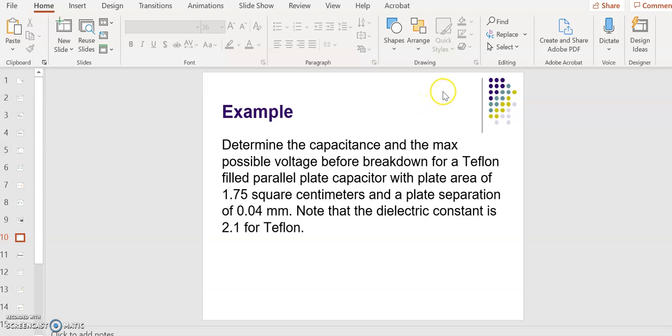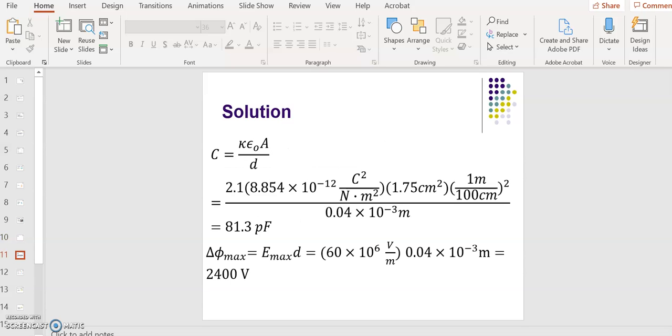All right, let's do an example problem here. In this problem, we are determining the capacitance and the maximum possible voltage before breakdown for a Teflon-filled parallel plate capacitor that has a plate area of 1.75 square centimeters and a plate separation of 0.04 millimeters. Note that the dielectric constant is 2.1 for Teflon, and it's 60 times 10 to the sixth volts per meter for the dielectric strength. This is a pretty straightforward example, which is nice for our first discussion of dielectrics.